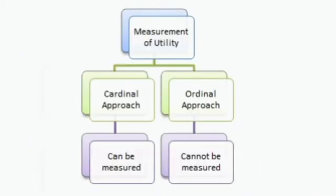Next, what is utility? Utility is the amount of satisfaction that we get after consuming goods. For example, if we buy something and consume it, the amount of satisfaction we get from that — how much satisfaction we get — that is utility. Now utility is of two types: cardinal theory of utility and ordinal theory of utility.